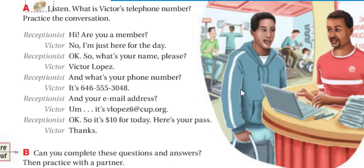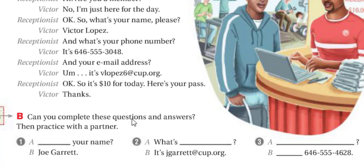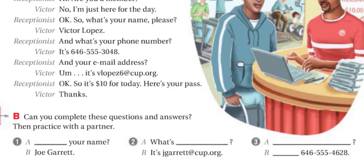Very good. Now you have to practice with your partner or by yourself — you can pause the video and then continue. Can you complete these questions and answers, then practice with a partner? 'What's your name?' — 'Joe Garrett.' 'What's your email address?' 'What's your phone number?'